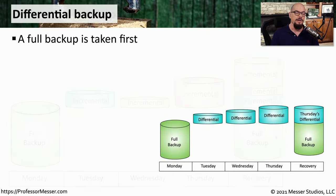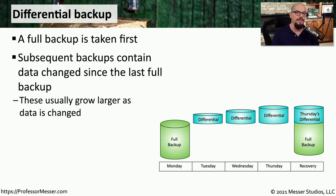A differential backup starts a similar way, where we have a full backup that backs up everything on the system. Each subsequent differential backup, though, is going to back up everything that's changed since the last full backup.